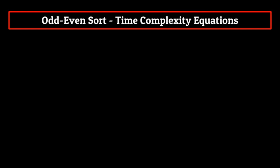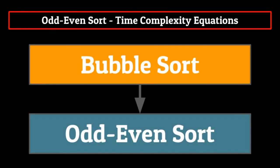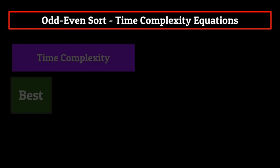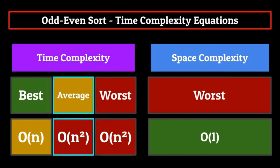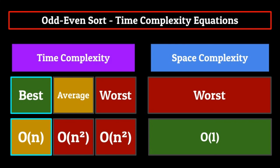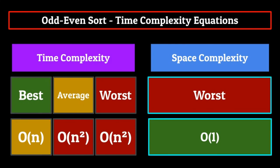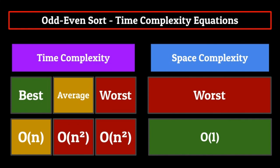Up next, it's time to talk about time complexity equations. Since odd even sort is a variant of bubble sort, its time complexity equations are going to be the same as we've discussed in previous episodes. Worst case scenario is O(n²), average case is O(n²), and best case scenario is O(n). Space complexity is a constant O(1) because we aren't creating any extraneous memory for the list to be sorted. If you want more detail into why these equations are what they are, the card in the top right corner will take you to the bubble sort lecture.